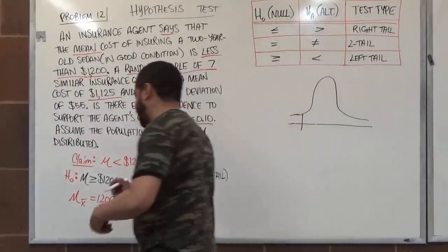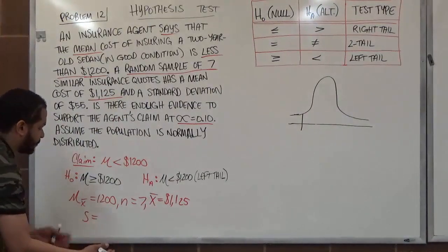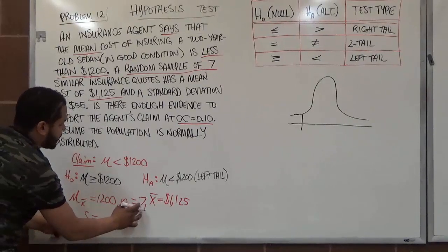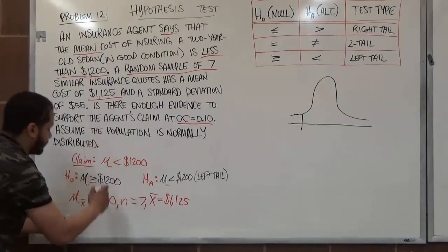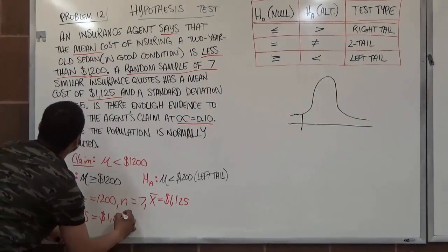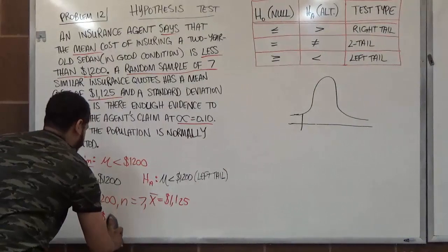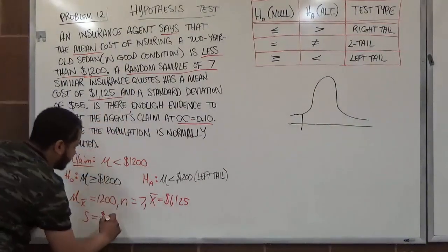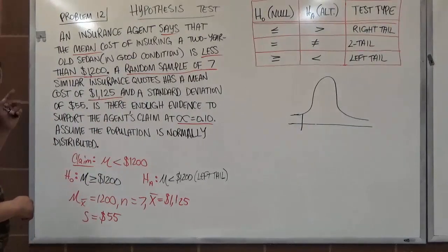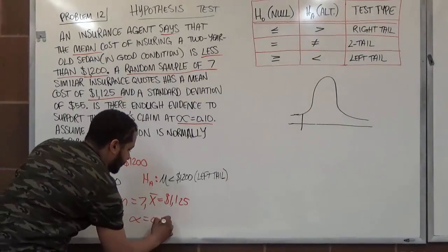The sample standard deviation is s = $55. Note that s (sample standard deviation) differs from σ (population standard deviation) — one is population-based while the other is based on a sample. The 7 sampled cars produce a standard deviation of $55. We also confirm that α = 0.10.